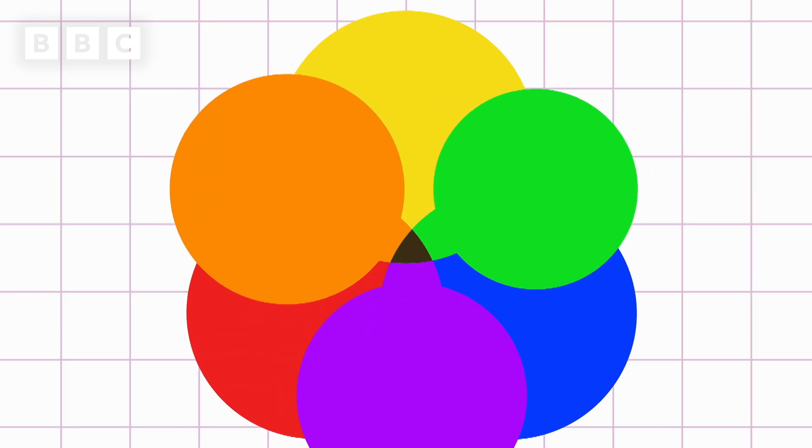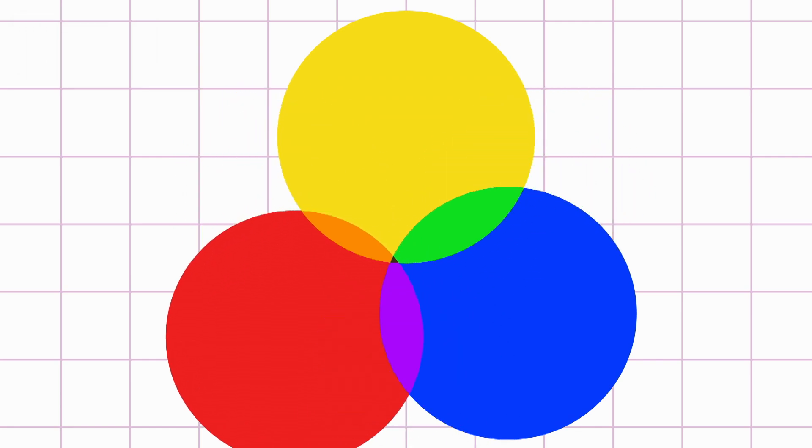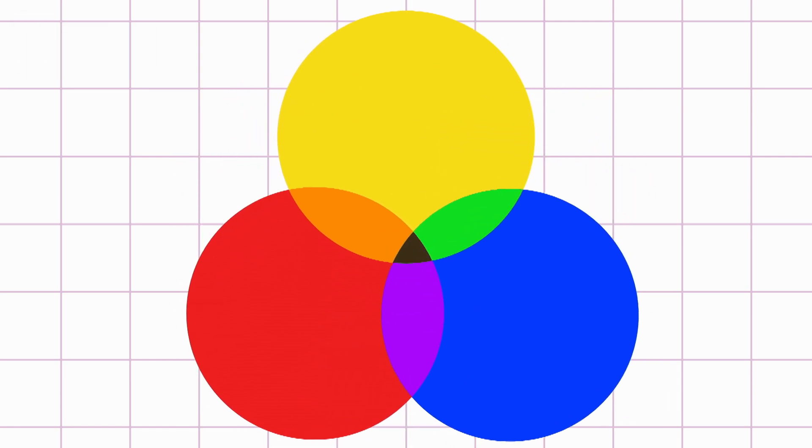Orange, purple and green are secondary colours made from mixing different combinations of our primary colours: red, yellow and blue. So many beautiful colours.